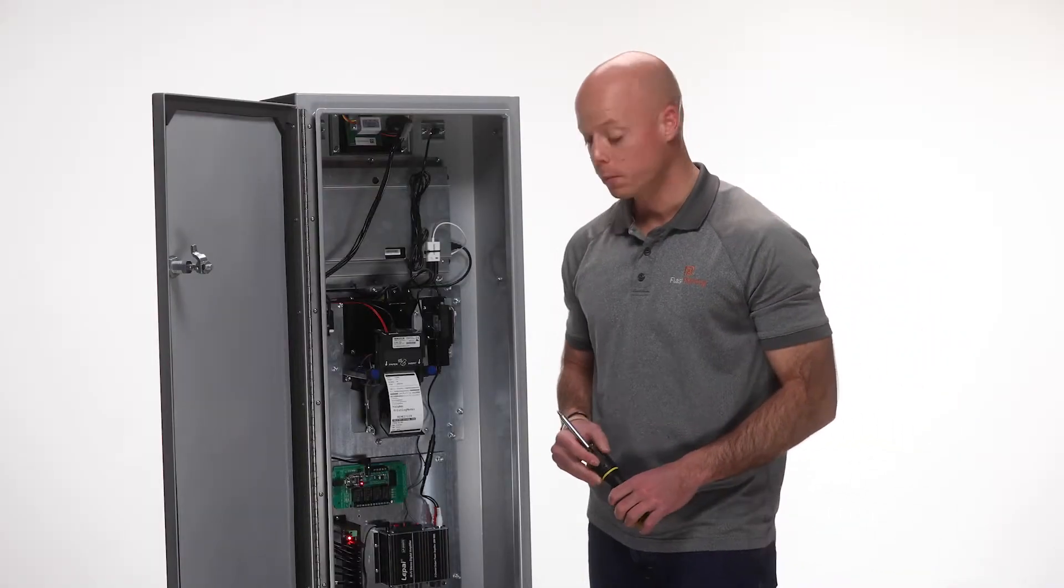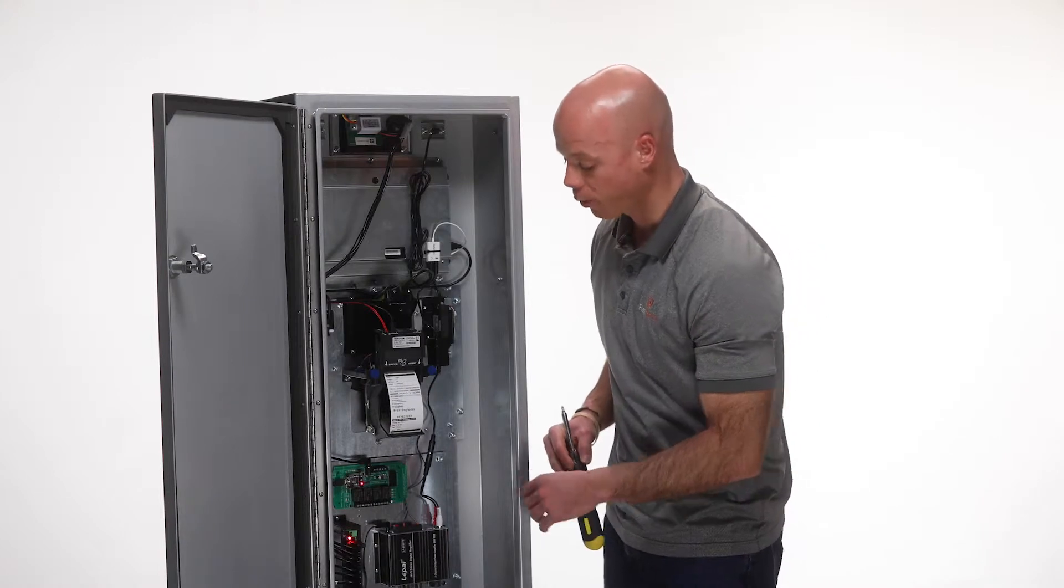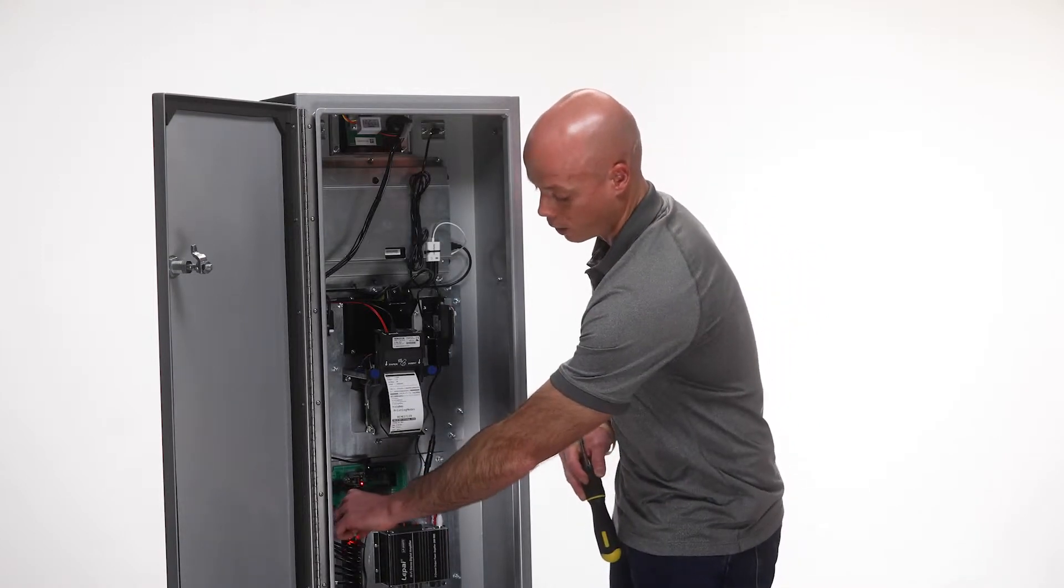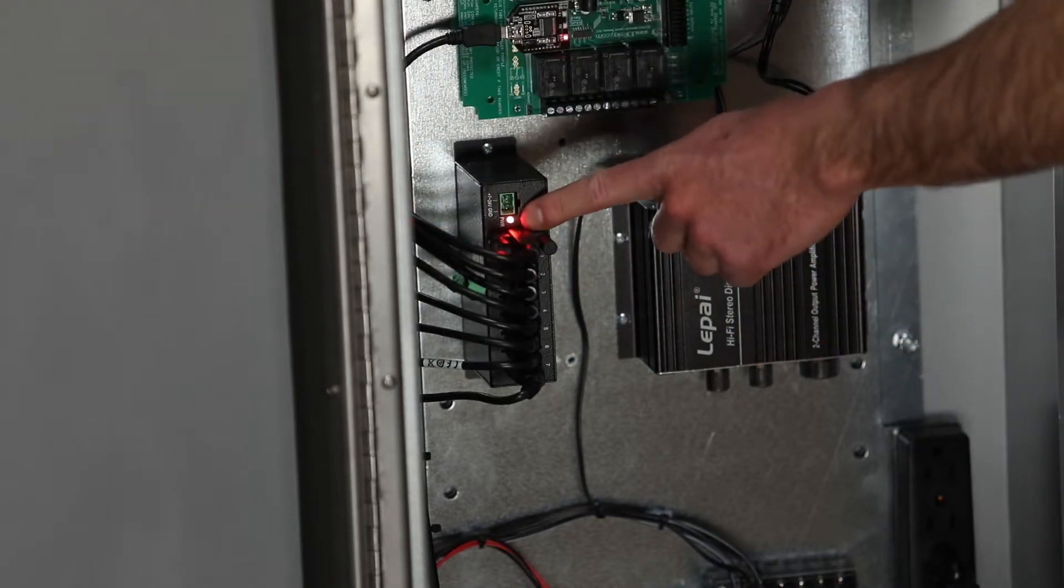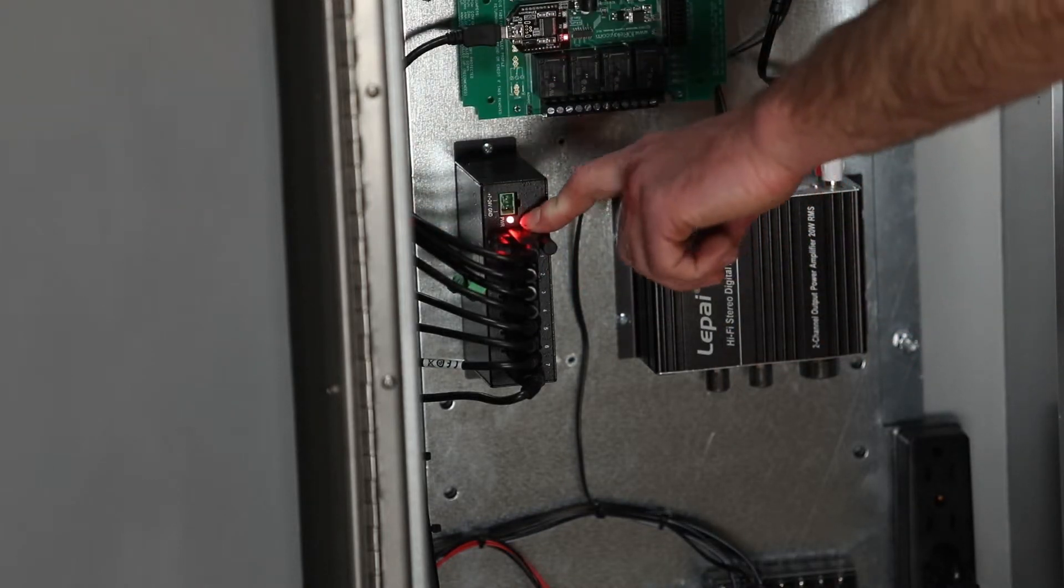The next step in replacing your USB hub is to disconnect the power from the top of the USB hub unit. You'll notice that the red light stays on due to the battery in the tablet.